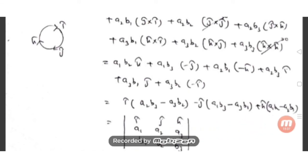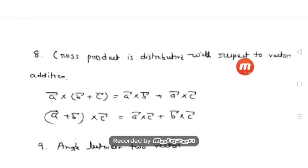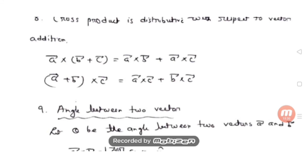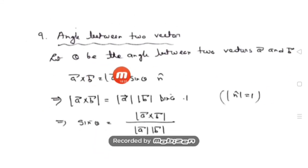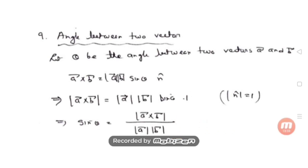Additional properties: Cross product is distributive with respect to vector addition — a-bar cross (b-bar + c-bar) = a-bar cross b-bar + a-bar cross c-bar, and both left and right distributive laws hold. Also, the angle between two vectors: if theta is the angle between a-bar and b-bar, then sine theta equals modulus of (a-bar cross b-bar) divided by (modulus of a times modulus of b).